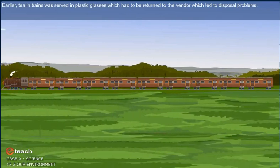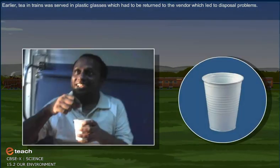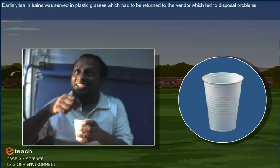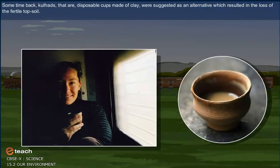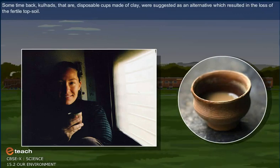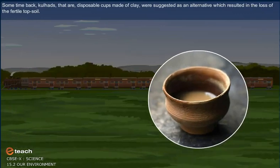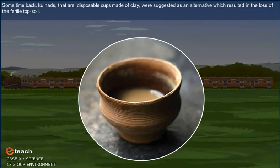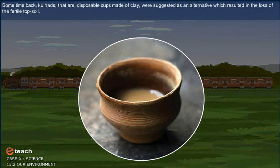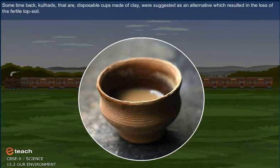Changes in packaging have resulted in much of our waste becoming non-biodegradable. Earlier, tea in trains was served in plastic glasses which had to be returned to the vendor, which led to disposal problems. Some time back, kullads, that is disposable cups made of clay, were suggested as an alternative which resulted in the loss of the fertile topsoil.